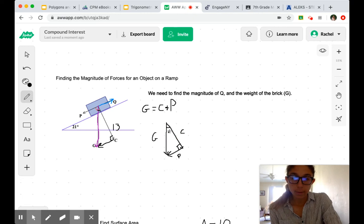Things we know so far: this angle is 21 degrees, this magnitude here is 13, and we know that we're trying to find the value of P so that we can eventually get to Q.